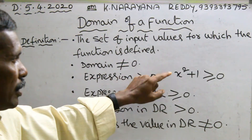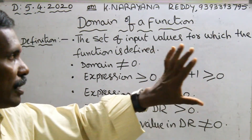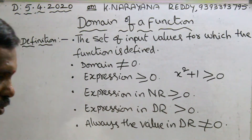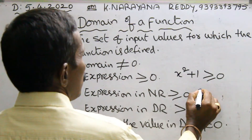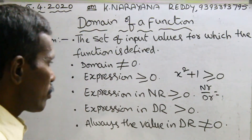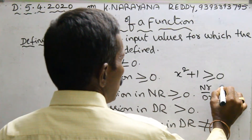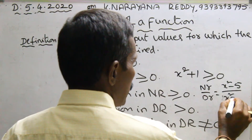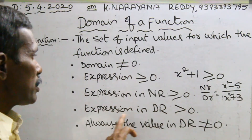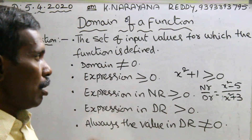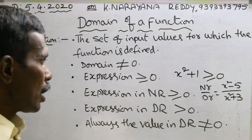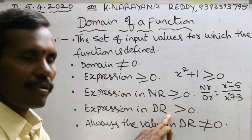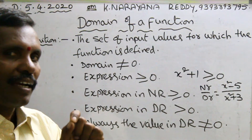Whenever this expression is not greater than or equal to zero, that is not suitable for the expression. Next: expression in numerator greater than or equal to zero. For example, x squared minus five is the expression in the numerator, which is greater than or equal to zero. The denominator — x squared plus three — is greater than zero, not equals to zero. Always remember: the denominator is not equals to zero, which is always greater than zero. That is the important point to remember in functions for domain.